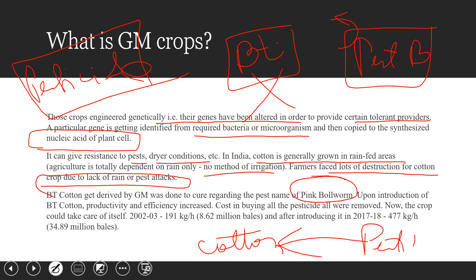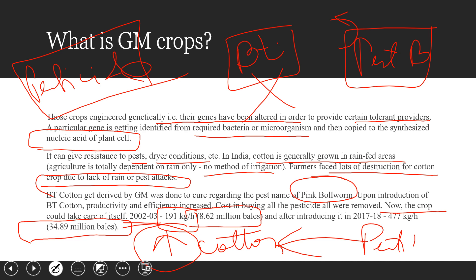The cost of cotton production was reduced and the quantity of production increased, so farmers benefited greatly on both fronts. From 2002-03, production was 191 kg per hectare — 8.62 million bales. After the introduction of BT cotton, by 2017-18 it rose to 427 kg per hectare — 34.89 million bales. That is more than four times the production, and the cost for pesticide was also saved. It was a win-win situation for the farmer.